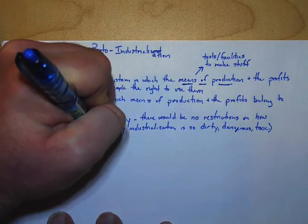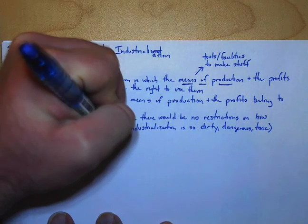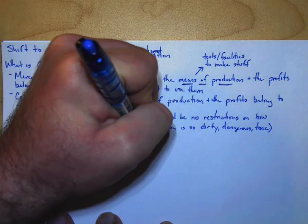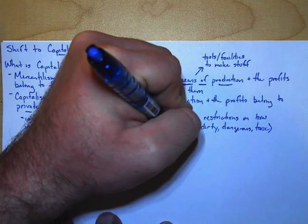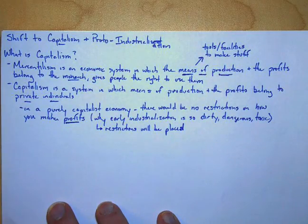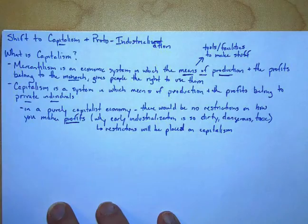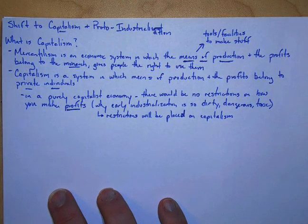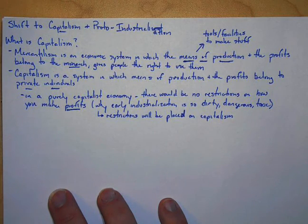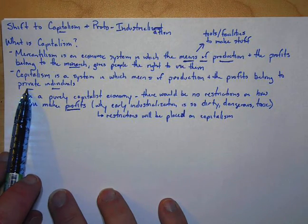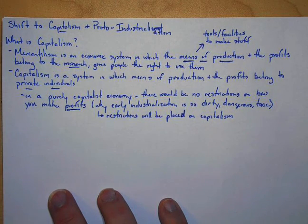Eventually, there will be restrictions placed on capitalism, but we'll worry about that when we start talking about the political effects of the Industrial Revolution. So the idea of capitalism is that private individuals own the means of production — the stuff that makes stuff — and they get to have the profits. They're going to do whatever they can to make as much money on their investments.